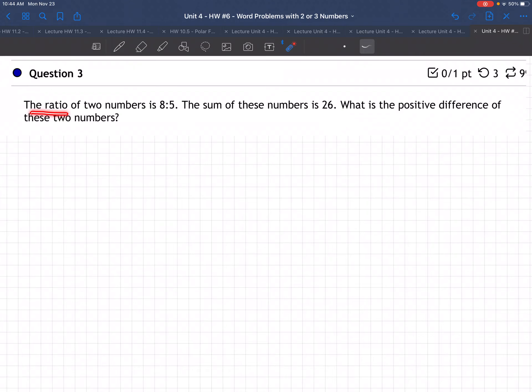In this problem, we are looking at the ratio of two numbers is 8 to 5. The sum of these numbers is 26. What is the positive difference of these two numbers?